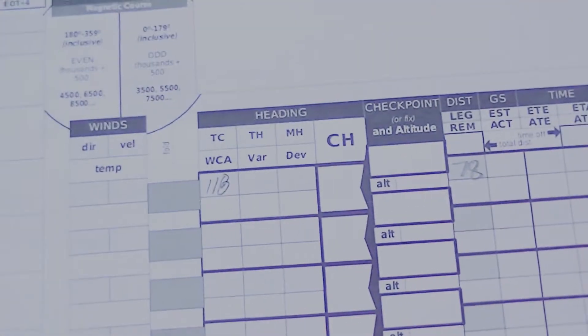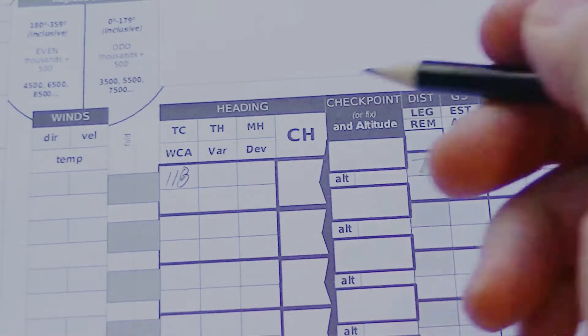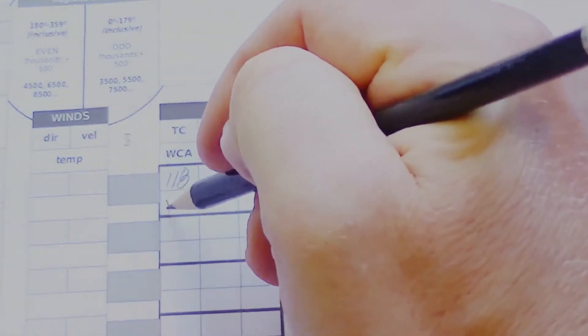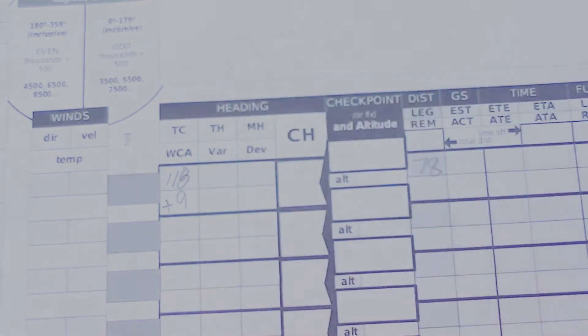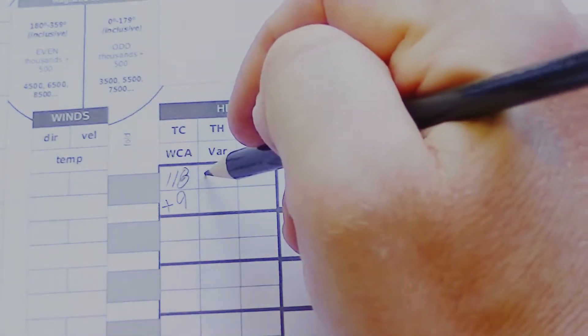So we'll just plug that information into our navigation log. Our wind correction angle is plus 9. And that gives us a true heading of 127 degrees.